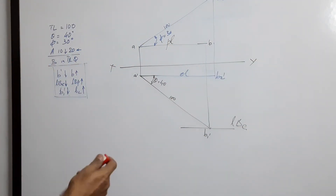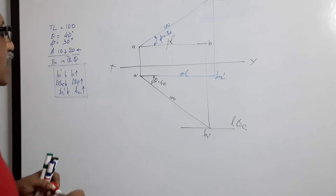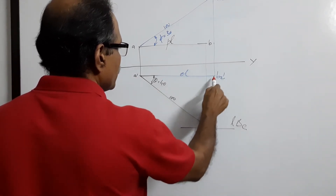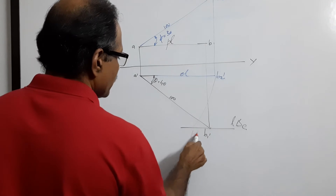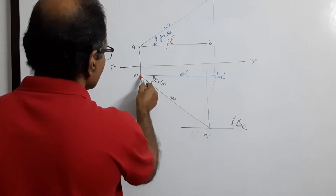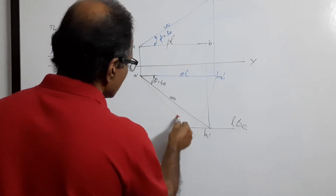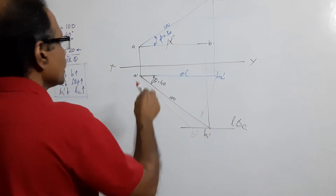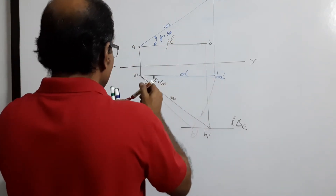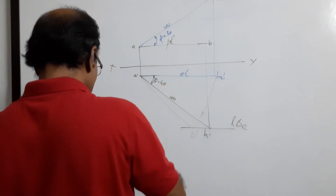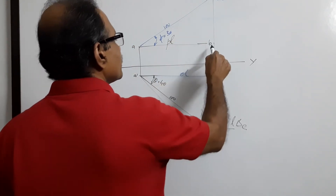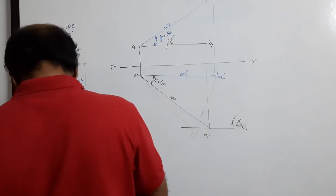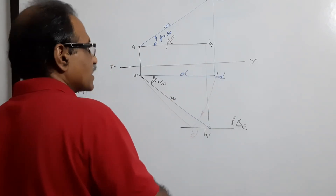Then simply combine: with a-dash as center and elevation length as radius, cut an arc at corner b to get b-dash. a-dash b-dash is the elevation. With a as center and b1-dash as radius, cut an arc to get b1.